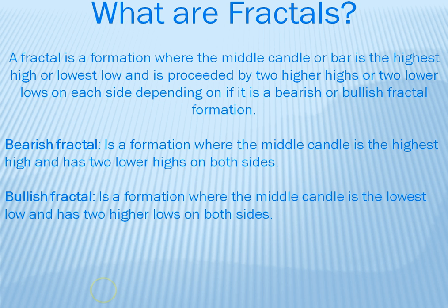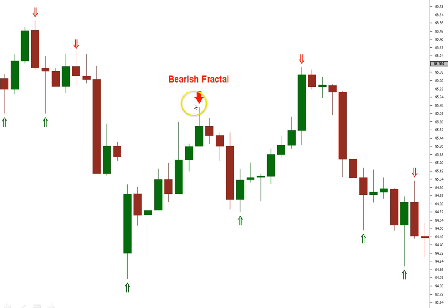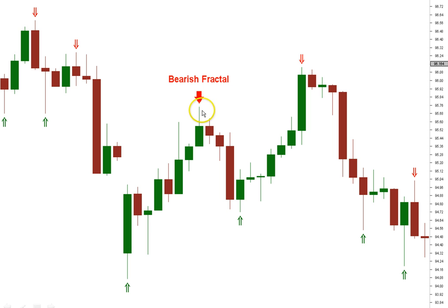A bullish fractal formation is where the middle candle is the lowest low and has two higher lows on both sides. Here's that bearish fractal formation — you can see this is the highest high in the middle candle, and the highs on either side are not higher than it. So we have a fractal developing. When we see this and the next candle closes without a higher high, we know we need one more candle. If that candle's high is also not higher, this is a bearish fractal because the movement is downward. Just know this is a bearish fractal whenever you see that formation.